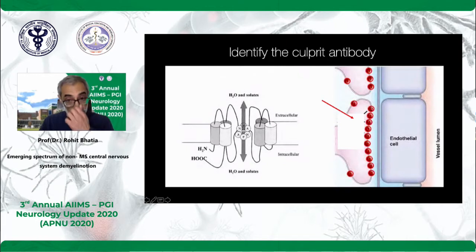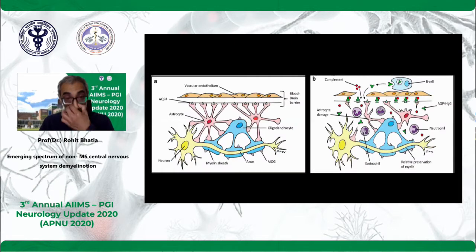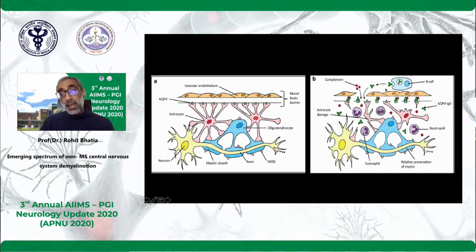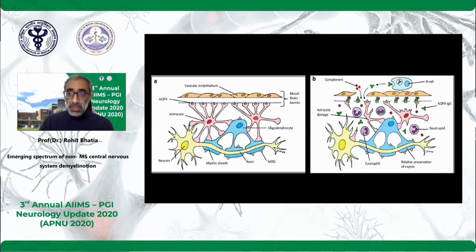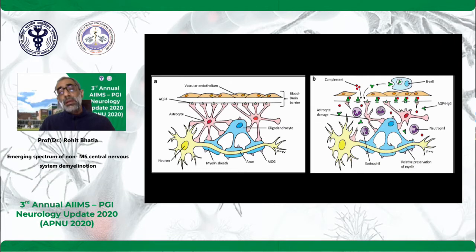If you look at this culprit antibody, this is classic aquaporin-4 antibody, because it is right at the astrocyte foot processes. Looking at how it works: this is the vascular endothelium, this is the astrocyte foot process, this is the neuron and the myelin sheath. When there is antibody-mediated damage along with complement, it ruins the astrocyte foot process — that's why NMO spectrum disease is an astrocytopathy, not really a demyelinating disease. The secondary damage to the myelin sheath occurs because of complement and eosinophil-mediated damage, which is why many newer drugs act against the complement pathway for treatment of NMO spectrum disease.